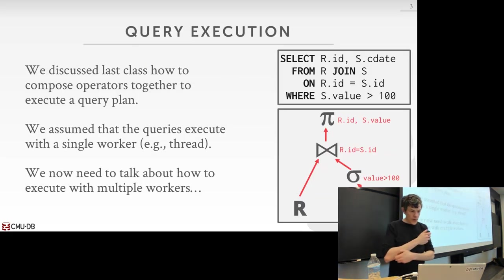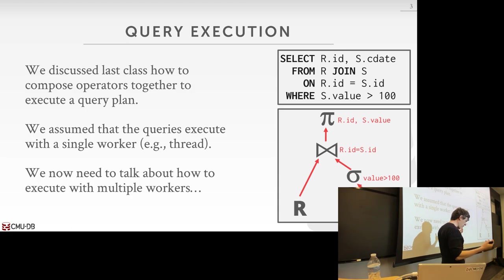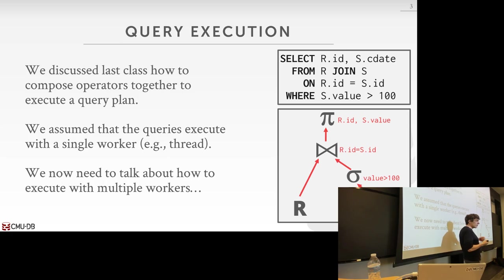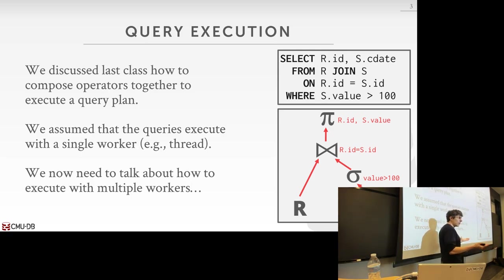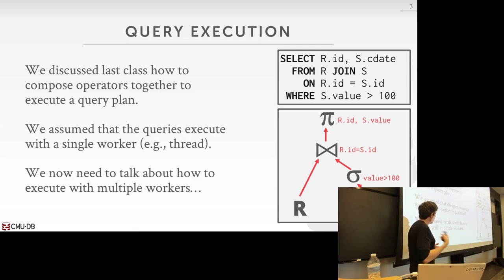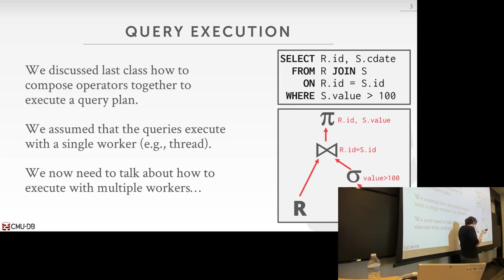So let's jump into it. Last class we started talking about query execution. We said we'd have these operators in our query plan, and we showed different ways to move data from top to bottom or bottom to top. We showed that sometimes you could send a single tuple, a batch of tuples, or all the tuples from one operator to the next. Now what we're going to talk about today is how the data system actually executes these things — we'll have these workers take operators and execute them to produce some result.